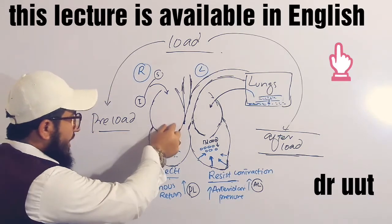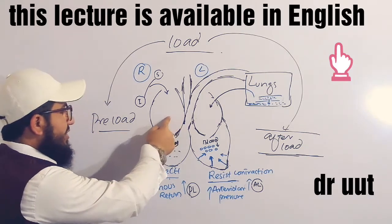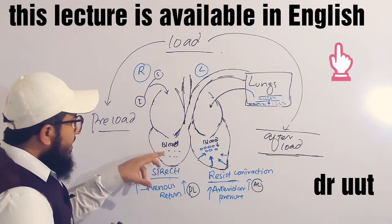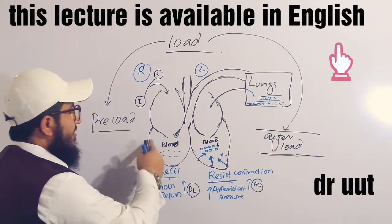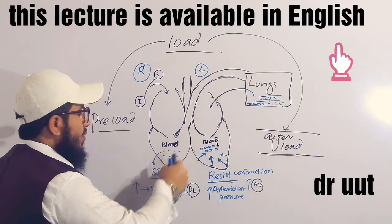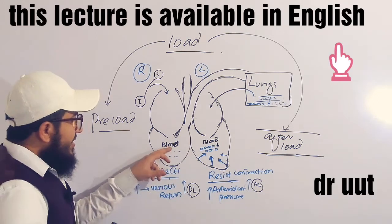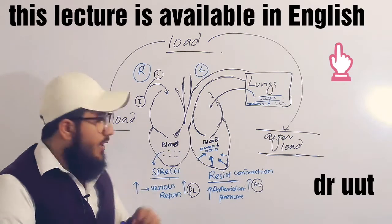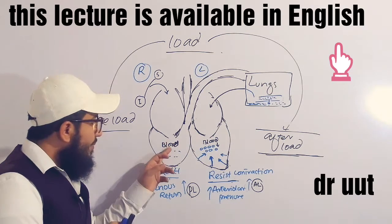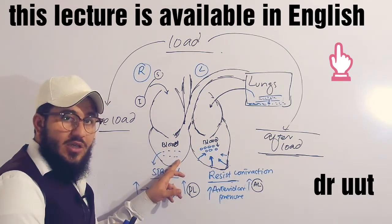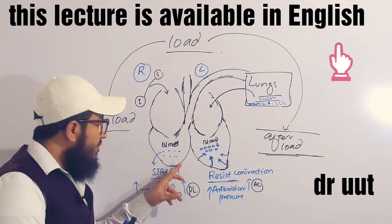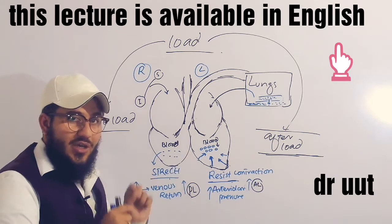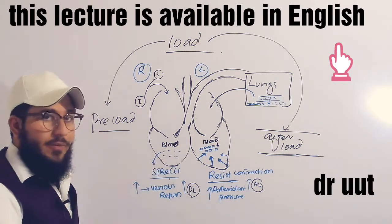As blood is poured down into the atrium and ventricle, it will exert a pressure on the walls of the ventricles. What will happen is the ventricular wall will stretch. This blood pressure on the wall of the ventricle causes the muscles to stretch. So this is the preload.